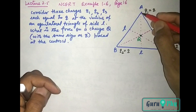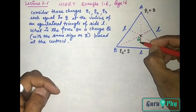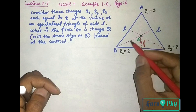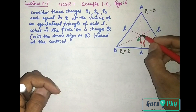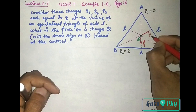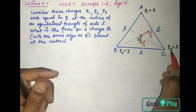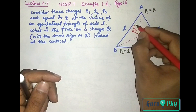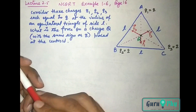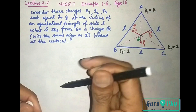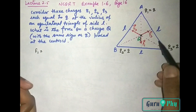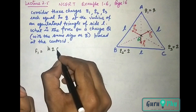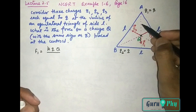जो Q1 charge है, यह Q पर repulsive force लगाएगा — इस direction में। इस force को हमने F1 consider कर लिया। Now, Q2 will apply force F2 in this direction. The charge Q3 is applying force F3 on capital Q in this direction. हमें पहले F1, F2, F3 का magnitude check कर लेना है। F1 = K · q · Q / R², जहाँ distance R है।